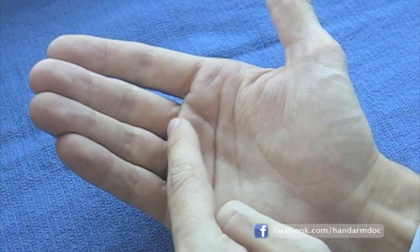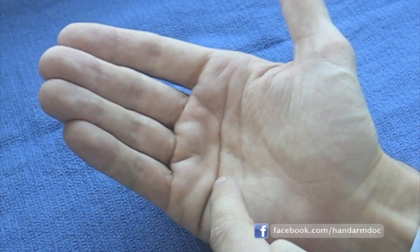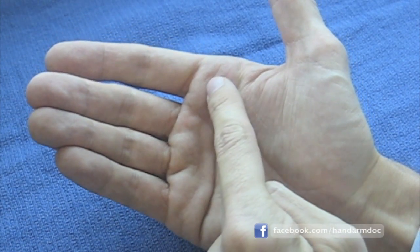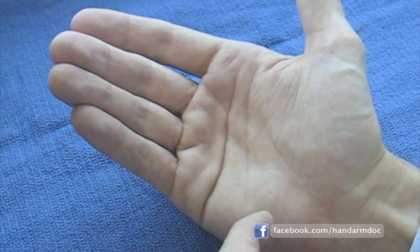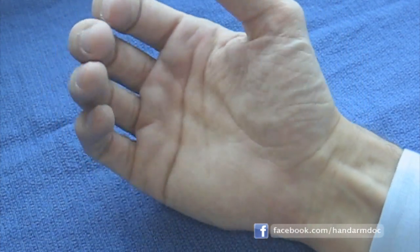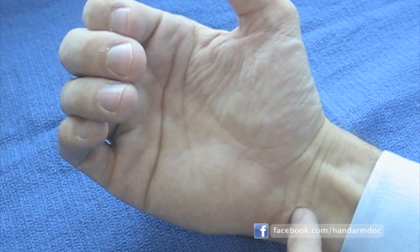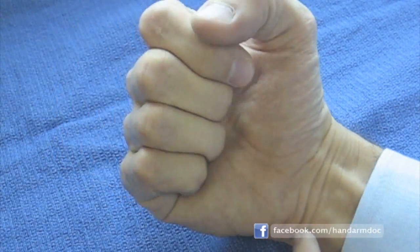The major crease at the wrist on the palm side is simply called the wrist flexion crease. It's formed as the wrist joint bends into a flexed position.